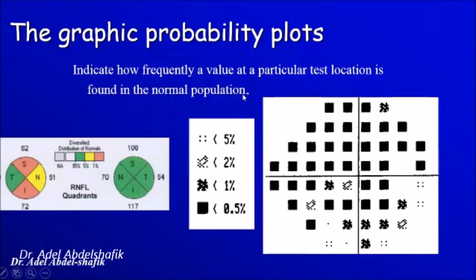This is what we see in the visual field, and the same applies in the OCT. If a point occurs in a very small part of the population, we get a mark of 1% or 5%.